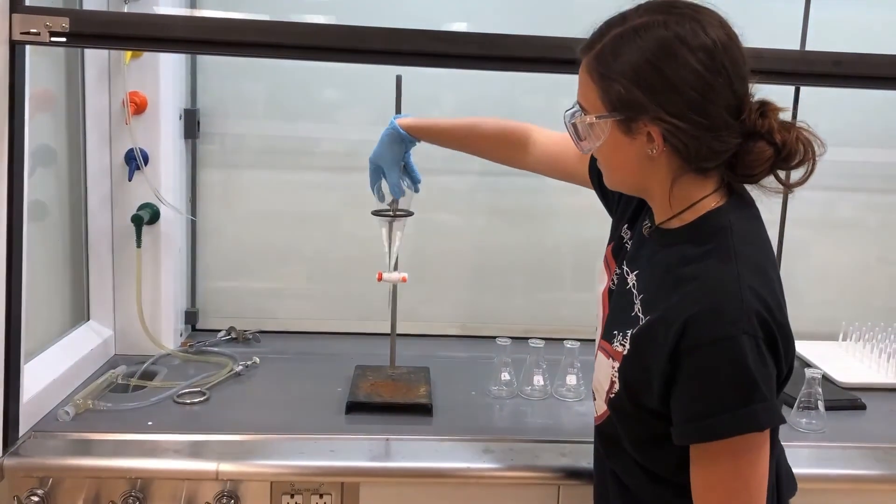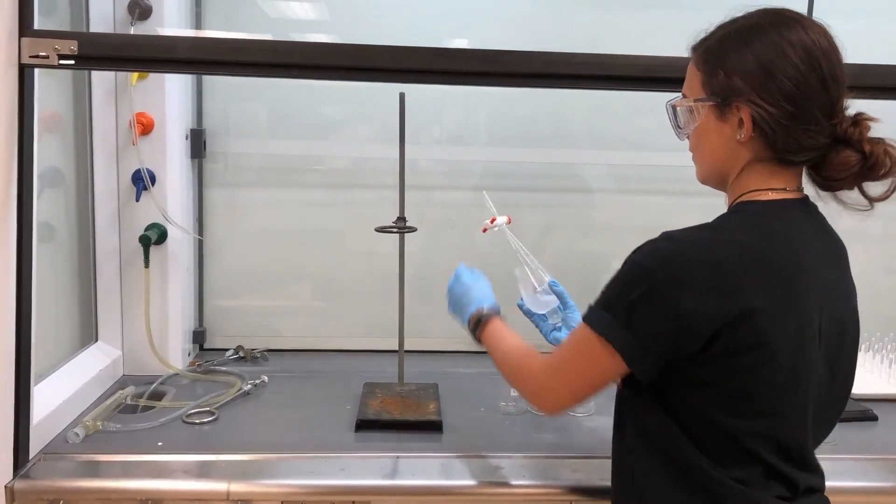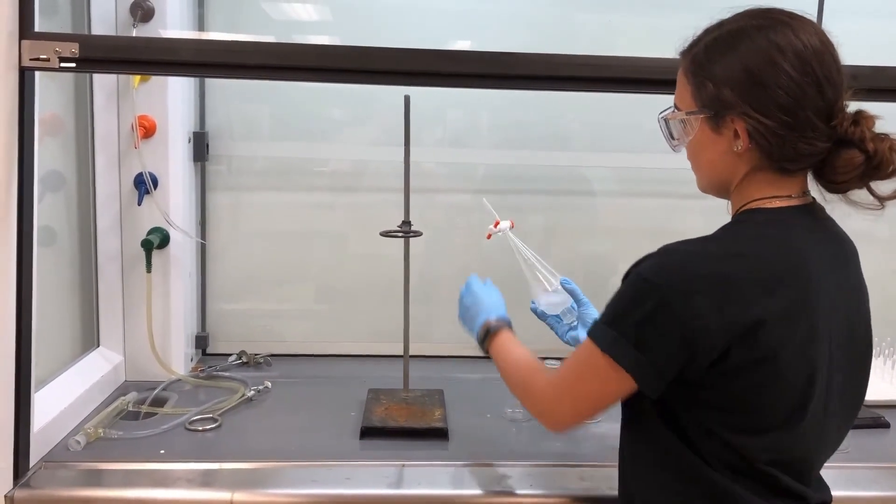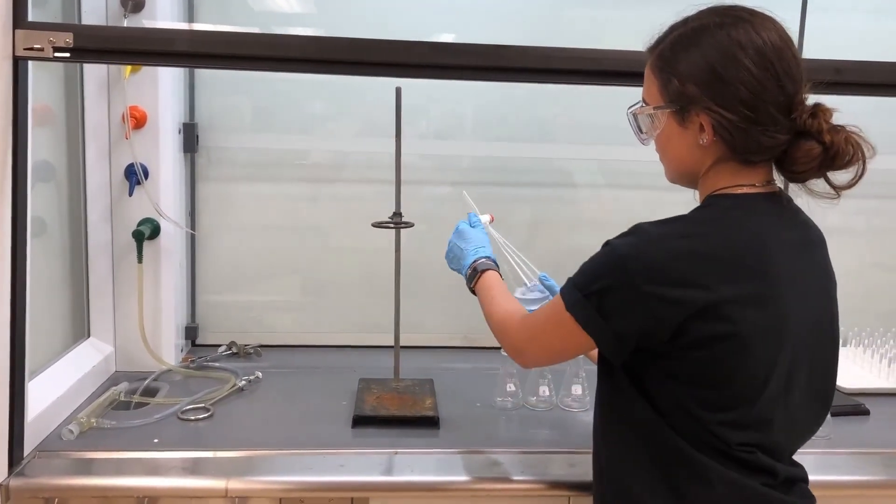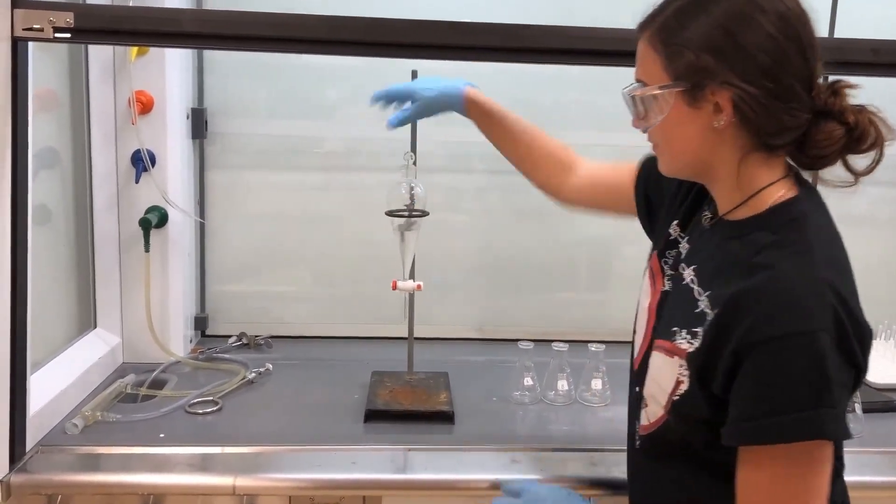To do this, you want to make sure that the cap of the sep funnel is at the palm of your hand and that the valve at the bottom of the sep funnel is closed. You then invert or shake the sep funnel like this a couple of times. To release the pressure, you must make sure that the nose of the sep funnel is facing away from you and is inside the hood. Once the pressure is released, place the sep funnel back on the metal ring clamp and wait for the layers to separate completely.